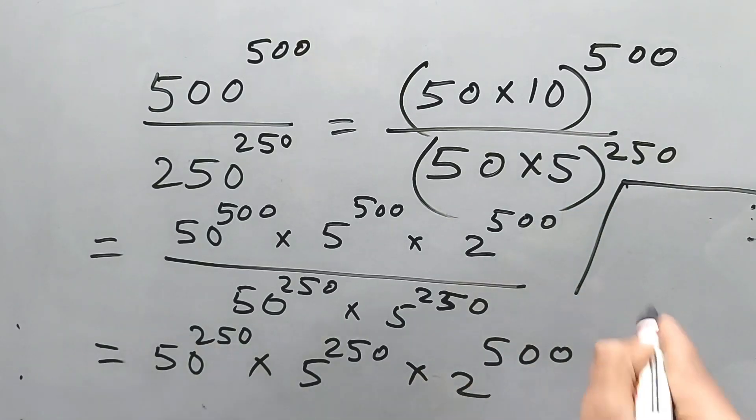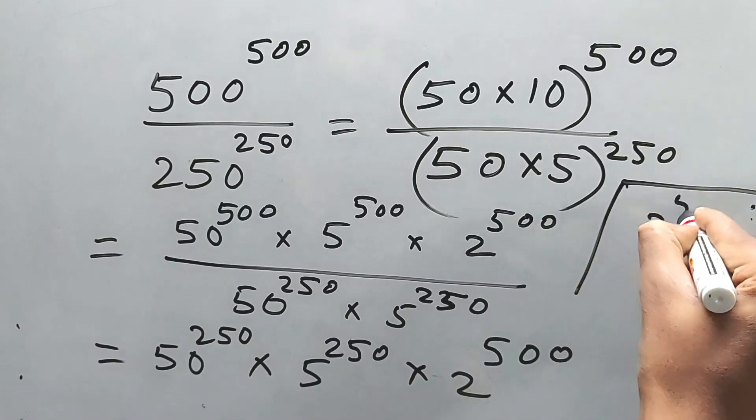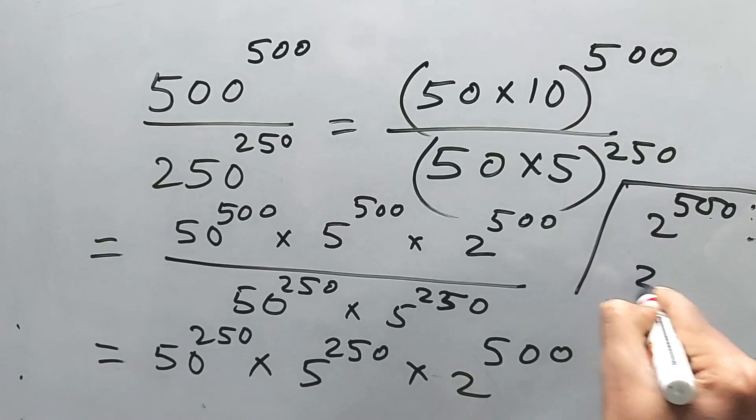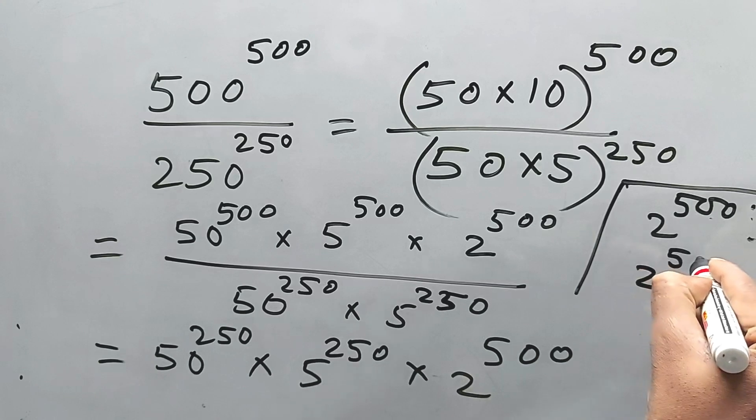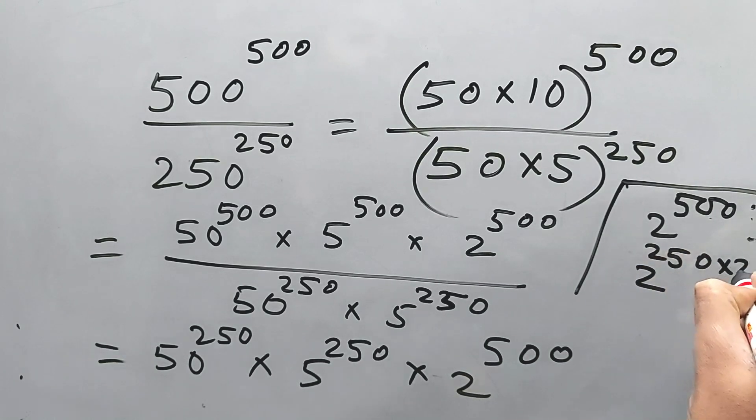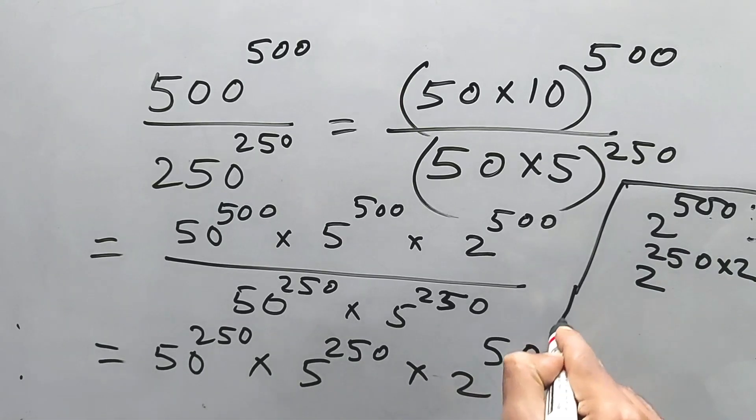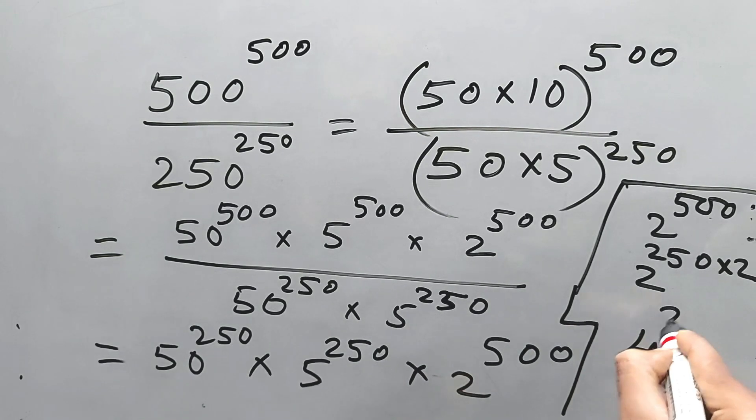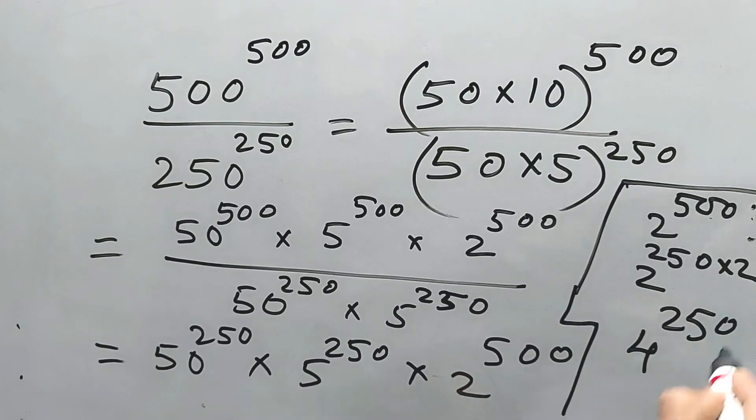2 to the power 500, we can write it as 2 to the power 250 times 2. So definitely this one will be 4 to the power 250, because 2 will come inside. 2 squared means 4.